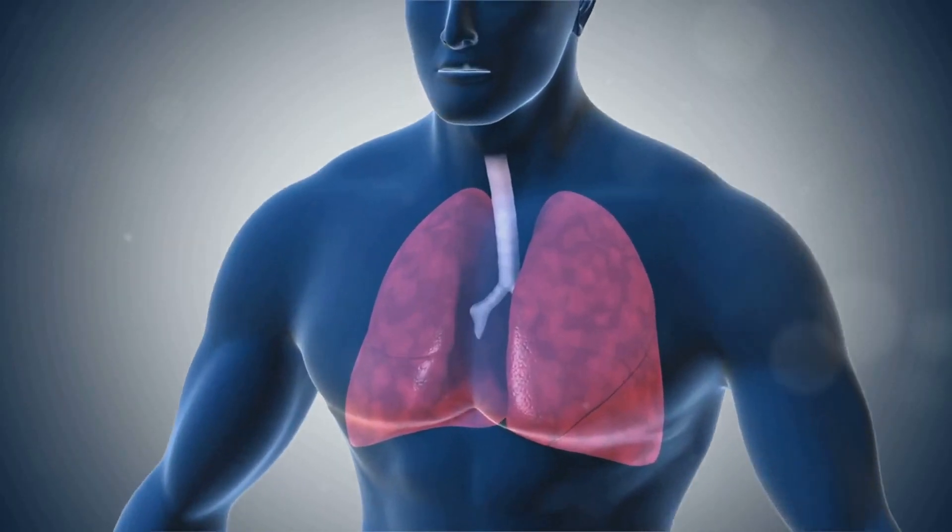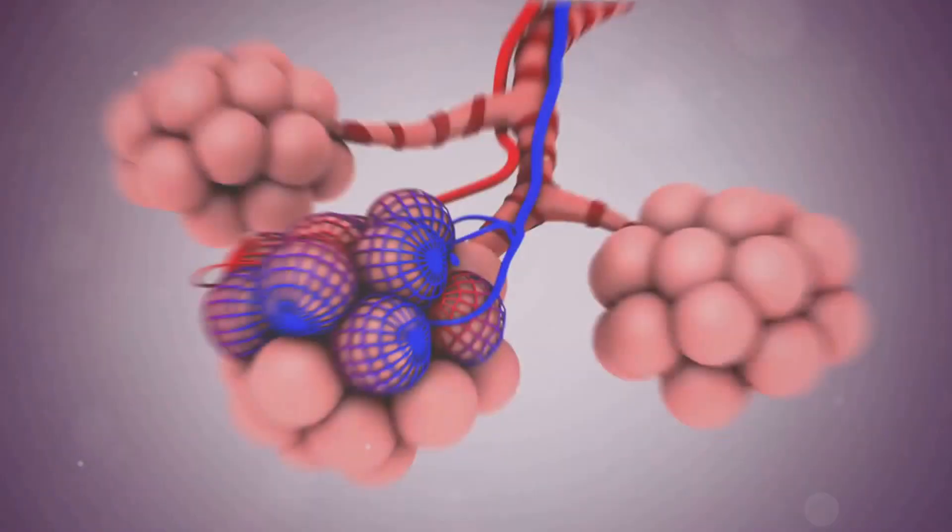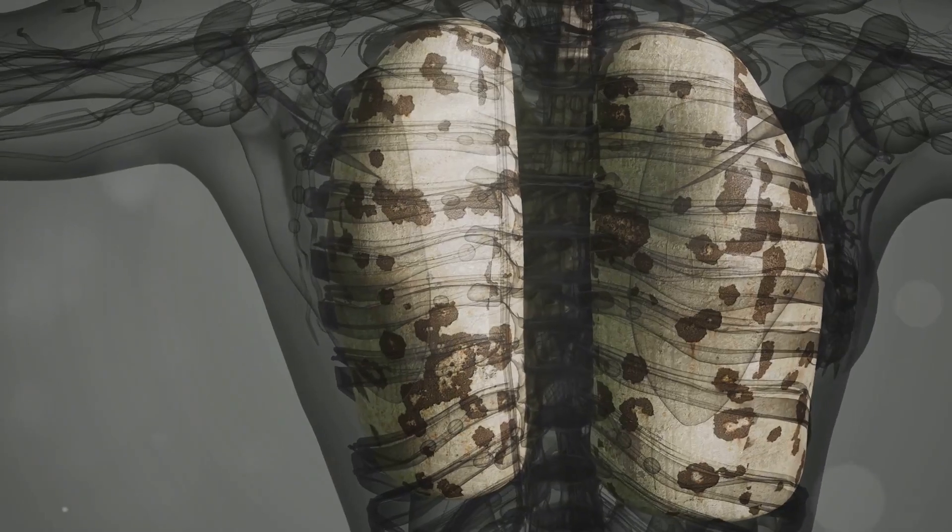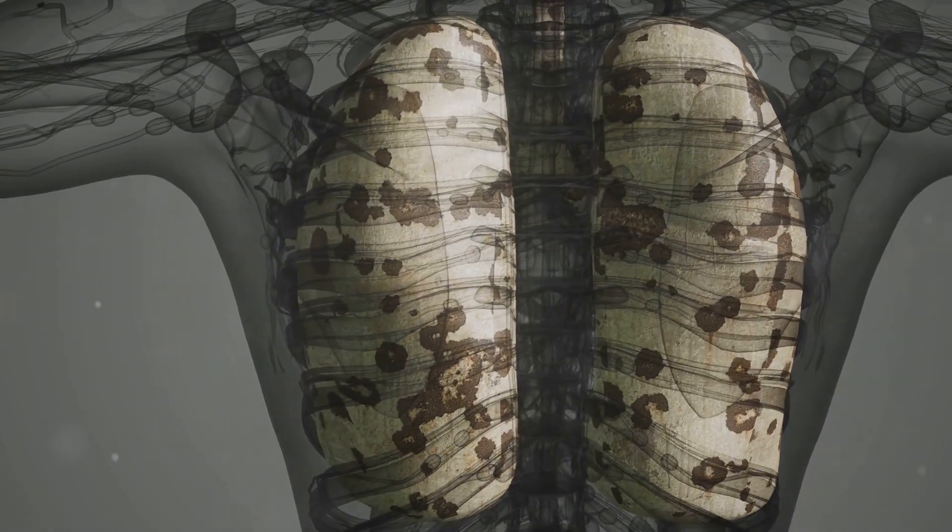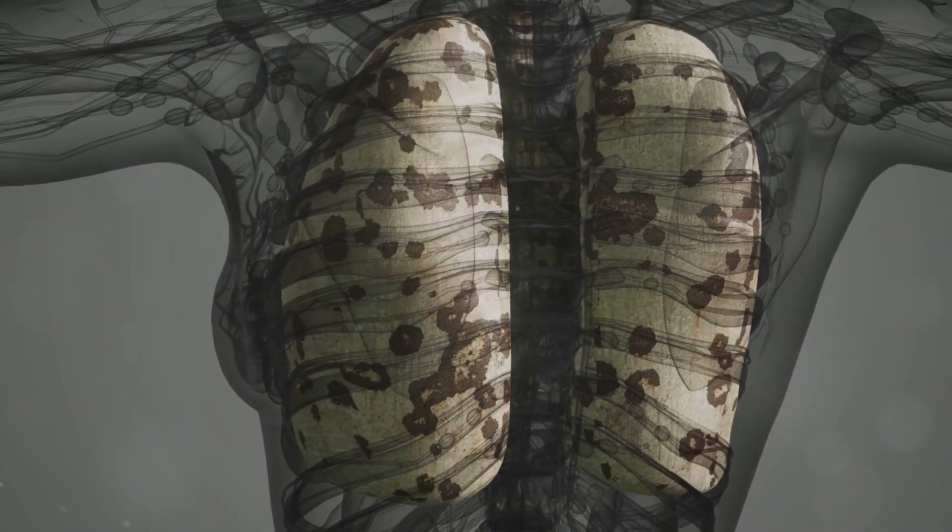If you spread out all the alveoli in your lungs, they would cover a tennis court. So take a deep breath. That's a lot of surface area doing some serious work.